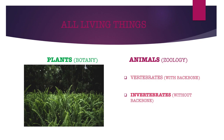To find the answer we have to understand something about all living things. All living things are divided into two parts: plants and animals. The study of plants is known as botany and the study of animals is called zoology. All animals are further divided into two sections: vertebrates and invertebrates.